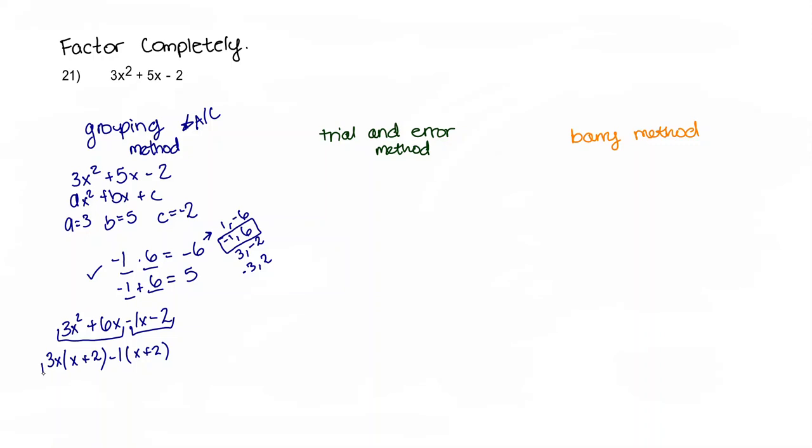Because in that case, I can just take out my x plus 2 as being my GCF for this whole term, leaving me with 3x minus 1. And that is my answer.